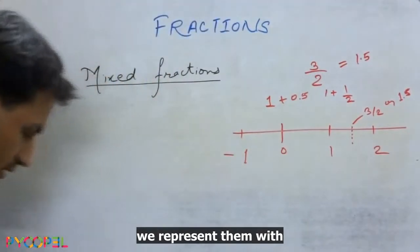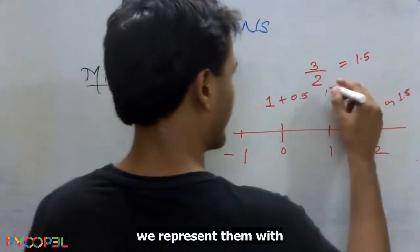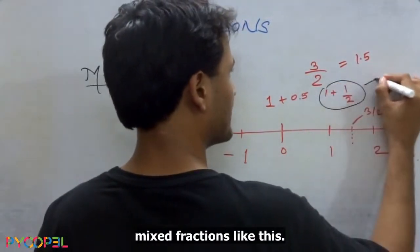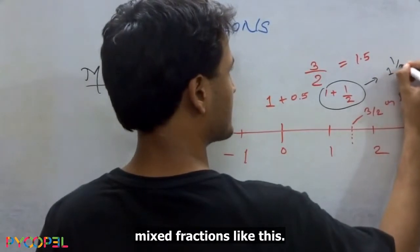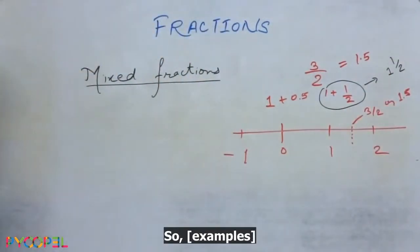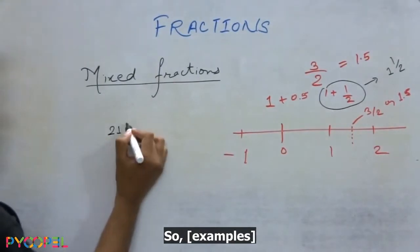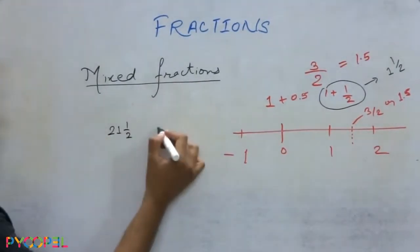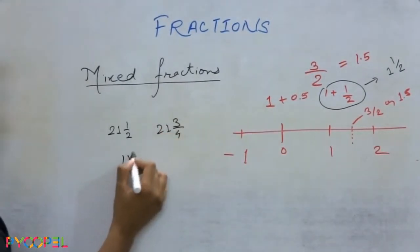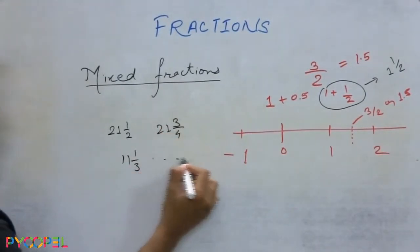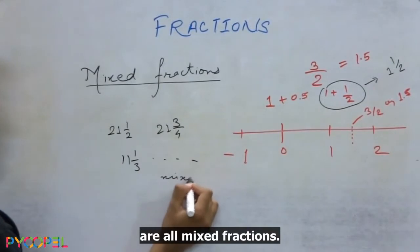When I have something like this, we represent them with mixed fractions like this. So 2 1/2, 1 by 2, 21 3/4, 11 1/3 or so on are all mixed fractions.